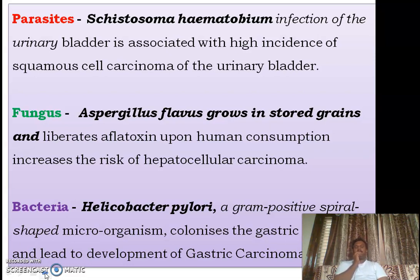Coming to fungi, one of the most well-known fungi is Aspergillus flavus, which grows in stored grains. We observe it whenever eating peanuts — we feel a bitter taste because of the presence of Aspergillus flavus. This liberates a toxin called aflatoxin. Upon human consumption, humans will be at risk of hepatocellular carcinoma, and the risk is much greater if the individual also suffers from HBV (hepatitis B viral) infection.